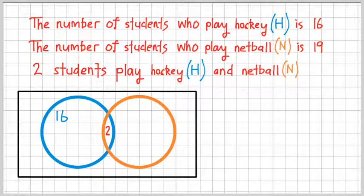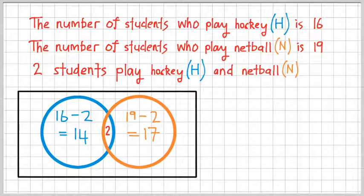Okay, so the blue circle is the total number of students who play hockey. That is 16. But what I want to put in here is this. Now I know 14 plus 2 is 16. So when I add up those two numbers there, I will get the total number of students who play hockey. Now that 14 represents the students who just play hockey, nothing else. Similarly, we can do that with netball. So the 17 there represents the students who only play netball and nothing else.